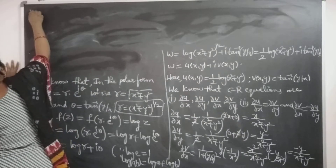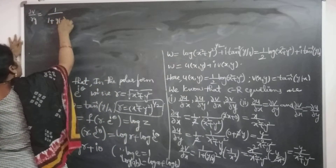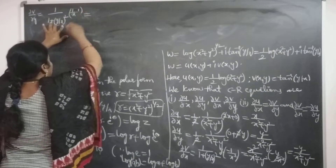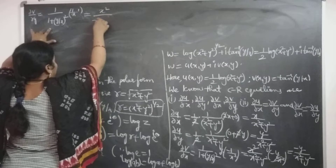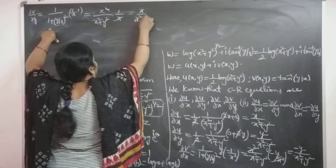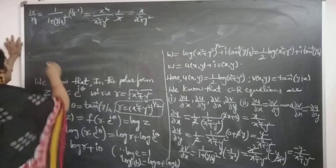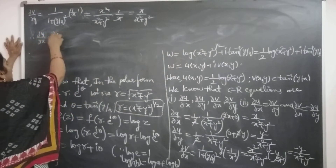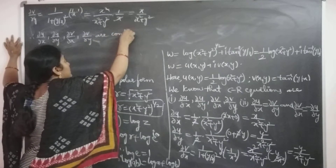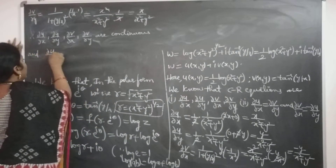For ∂v/∂y, differentiating tan inverse(Y/X) with respect to Y: we get 1 over (1 plus (Y/X)²) times 1/X, which after taking LCM gives X squared over (X squared plus Y squared) times 1/X, so X cancels, giving X over (X squared plus Y squared). Therefore, ∂u/∂x, ∂u/∂y, ∂v/∂x, and ∂v/∂y are all continuous.